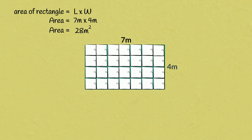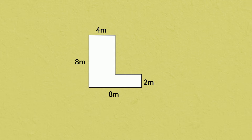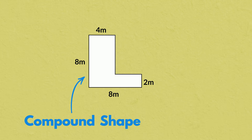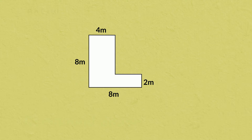This formula works for rectangles, but how do we go about working out the area of a shape like this? This shape is an example of a compound or composite shape. Compound shapes are shapes that are made up of two or more basic shapes. We can't simply use the formula of length times width. Let's see what would happen if we did.